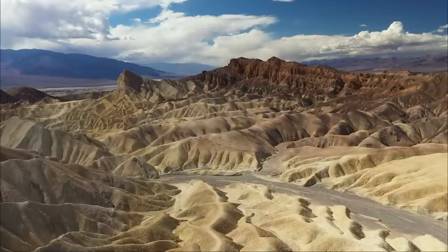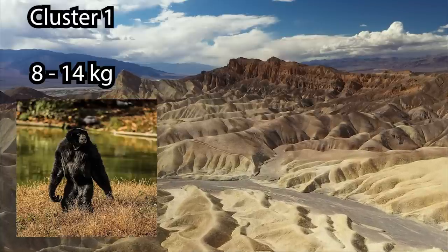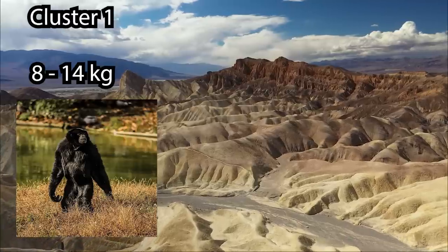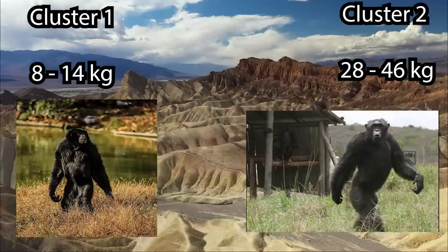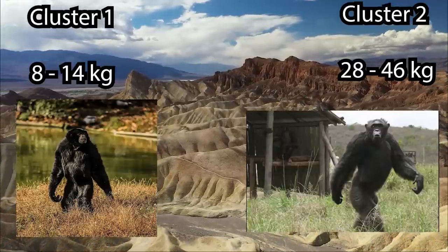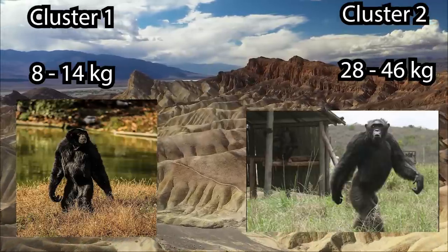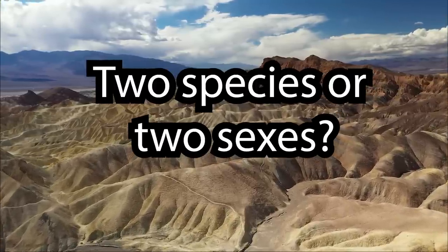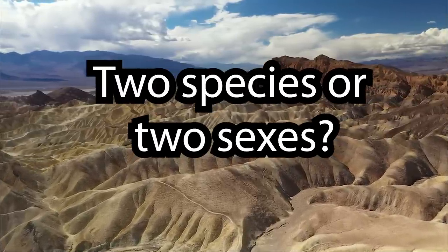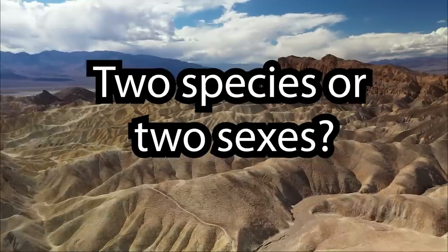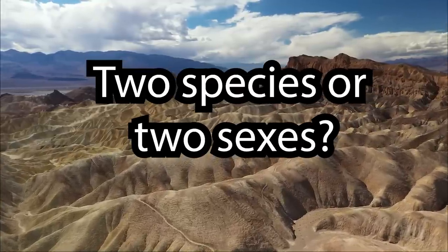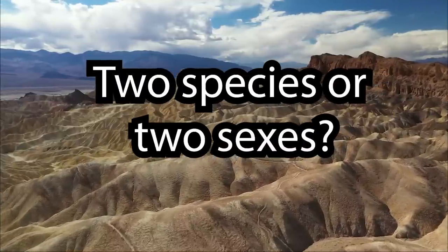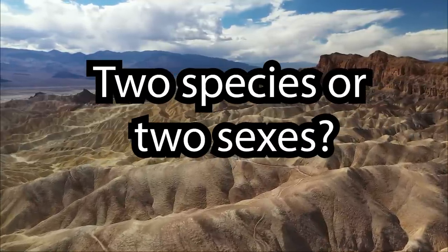The fossils clustered into two sizes, with one ranging from 8 to 14 kilograms — around the size of a modern-day siamang — while the other ranged from 28 to 46 kilograms, around the size of a modern chimpanzee. The original question was whether they represented two species of fossil ape, one small and one large, or a single, extremely sexually dimorphic species. If the latter was true, this would make Proconsul the most sexually dimorphic primate known to exist, with the largest males being nearly six times the size of the smallest females.